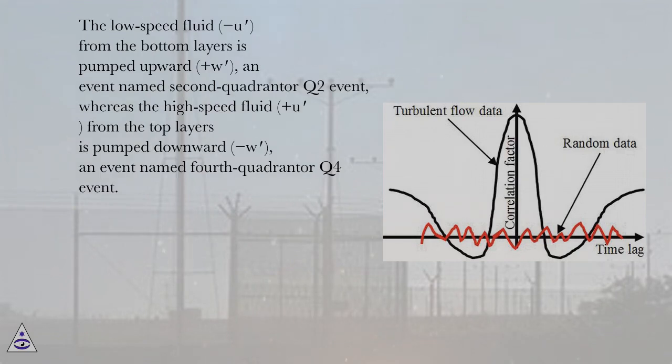The low-speed fluid (−u′) from the bottom layers is pumped upward (+w′), an event named second-quadrant or Q2 event, whereas the high-speed fluid (+u′) from the top layers is pumped downward (−w′), an event named fourth-quadrant or Q4 event.